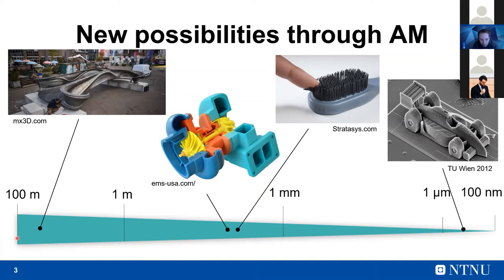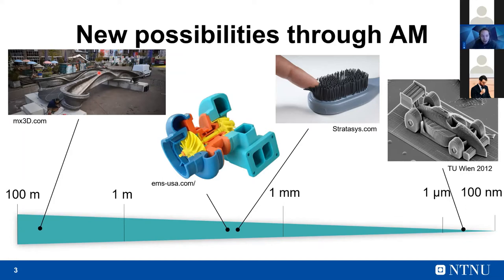With this principle we can produce metal parts at the 50-meter scale. Here you can see one of the bridges produced by MX3D — a laser welding process where two robots build a bridge in an additive manufacturing manner, approaching each other from each side. When they meet, the bridge is done. That's quite a neat concept for logistically demanding sites.